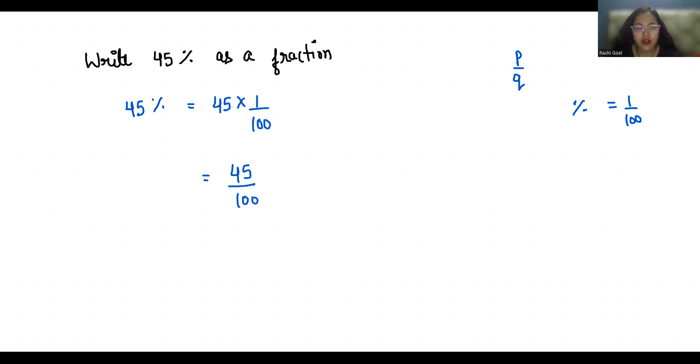So we will divide both numerator and denominator by 5. So it gives us 9 by 20. So 45 percent in terms of lowest fraction form is 9 by 20.